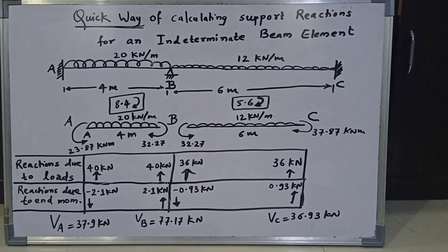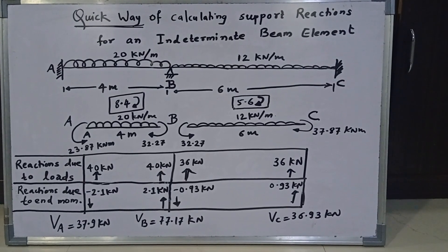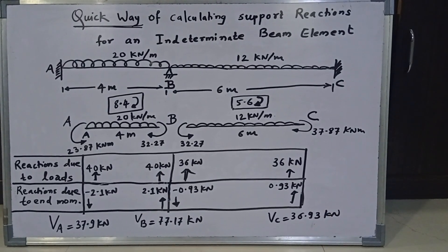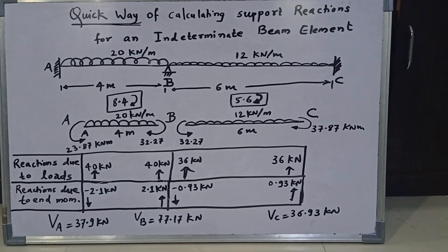And therefore, it will be 5.6 by 6 at B and going downwards that is minus 0.93 kN. And at C, it is 5.6 by 6 going upwards that is plus 0.93 kN.